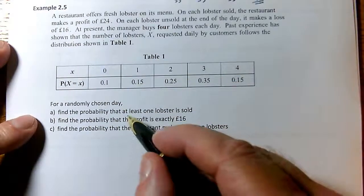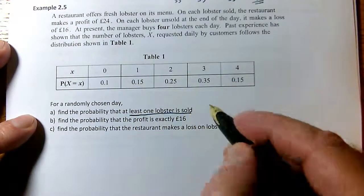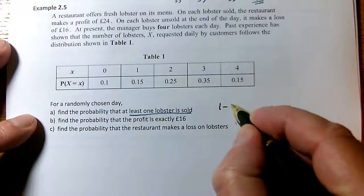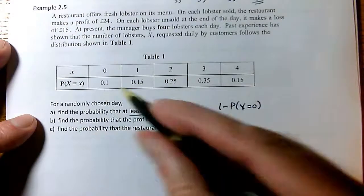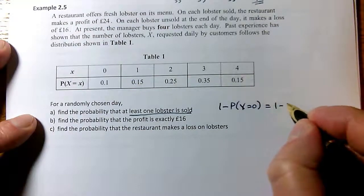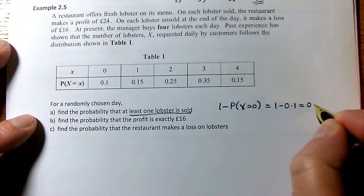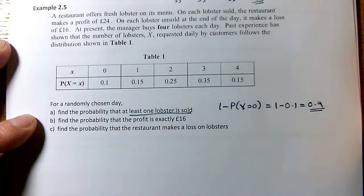And in fact, the first bit: find the probability of at least one lobster being sold. Well, at least one is always one minus the probability that none are sold. And the probability that x is 0 is 0.1, so this is easy. It's just one minus 0.1, which is 0.9. That's the probability of selling at least one lobster.